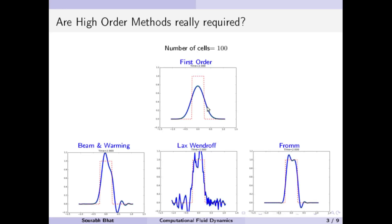So the obvious question that arises is: are higher order methods really required? Why not just increase the number of cells in the first order method — instead of using 100 cells, use say 1000 or 10,000 cells — and get a very accurate solution, as we have already seen that increasing the number of cells gives less diffused and more accurate solutions.